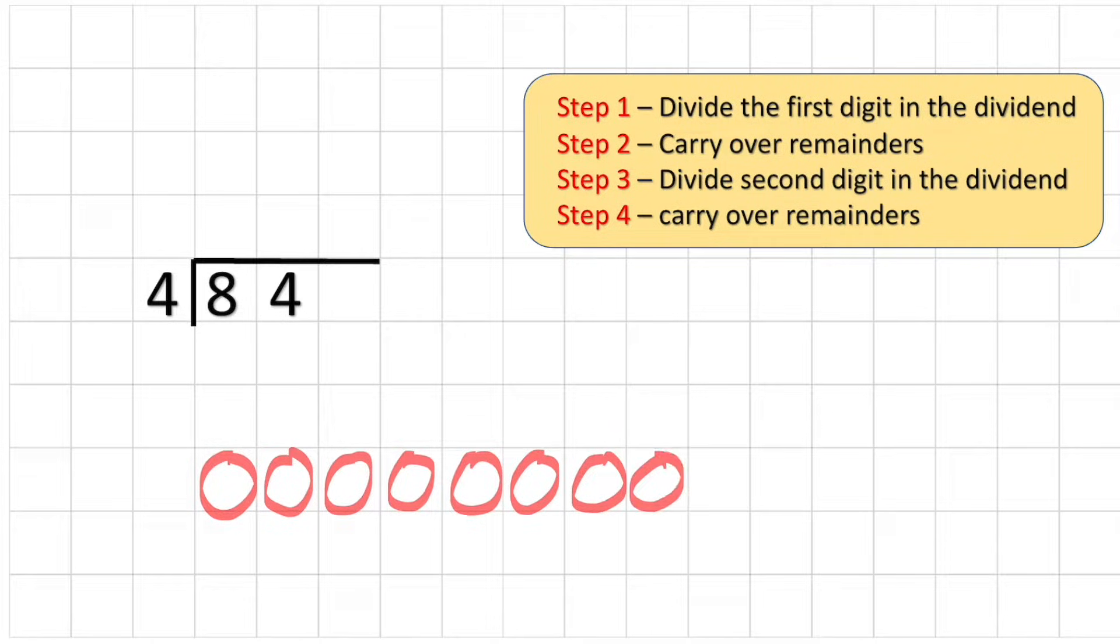So the answer to eight divided by four is two. And in this case we have no remainders. There is nothing left over here, so nothing to carry over into our next column.